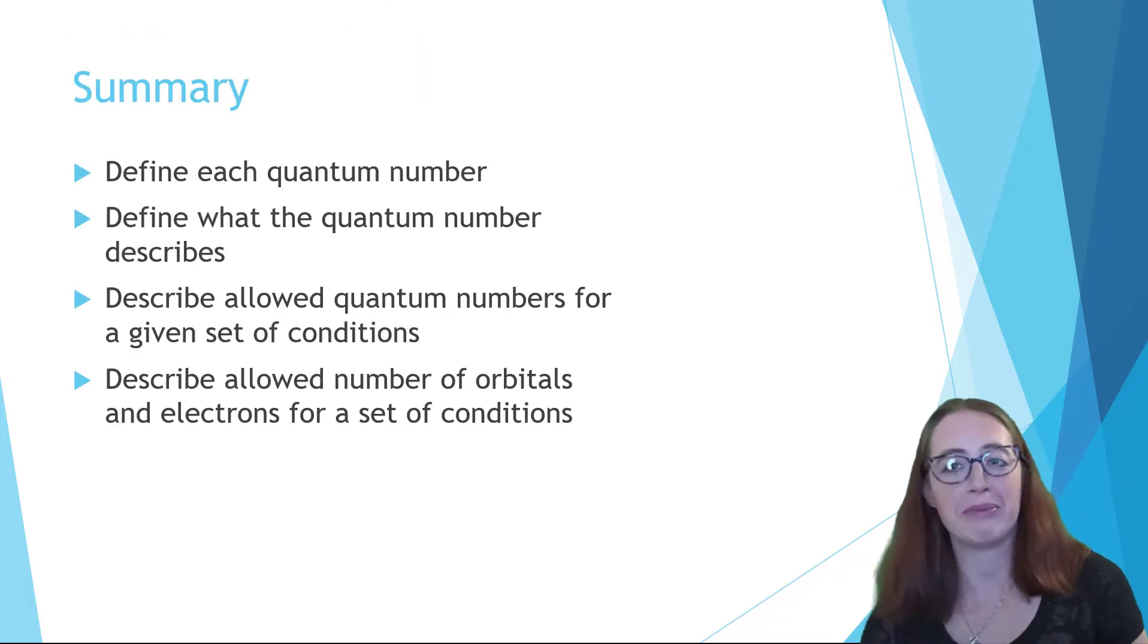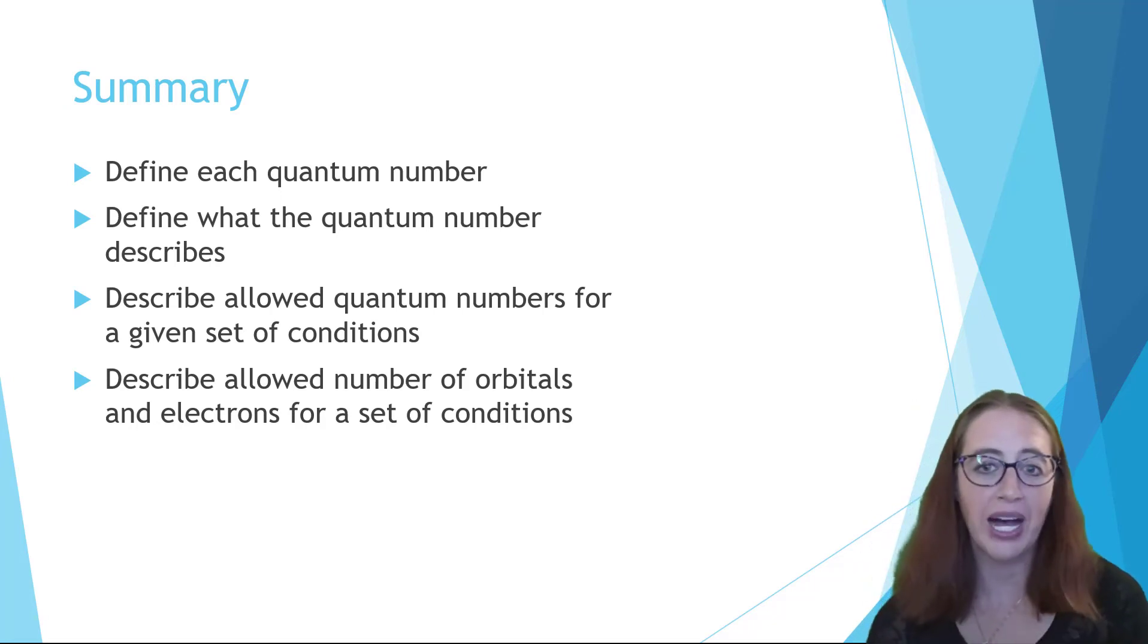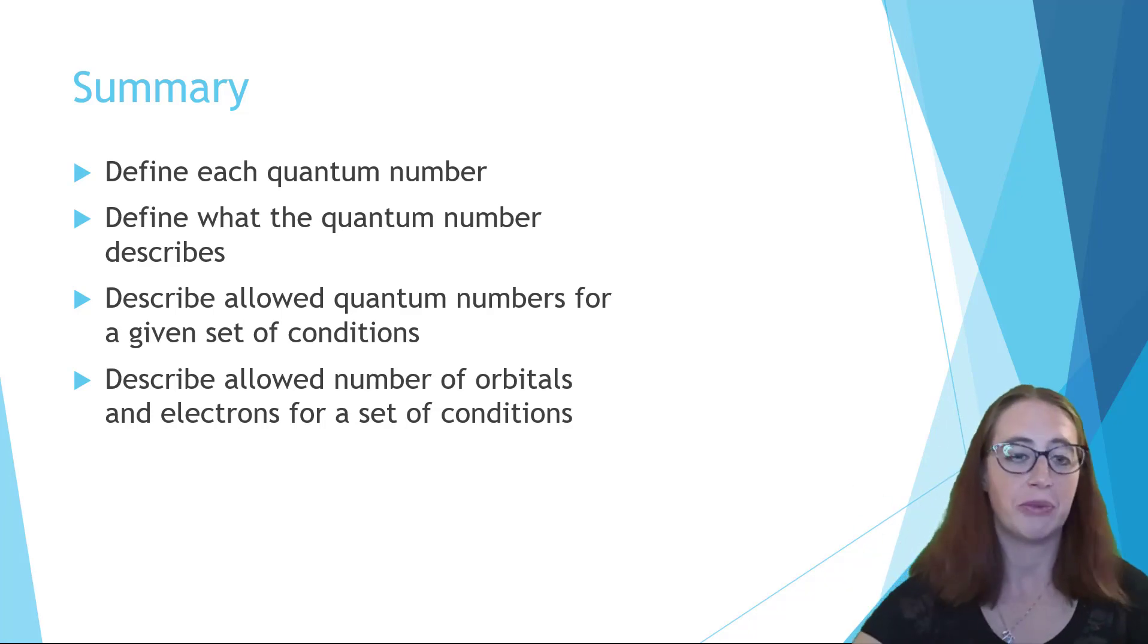We've now defined the four quantum numbers, n, l, m sub l, and m sub s. We've talked about why they are allowed to be the numbers that they are, and how that determines possible orbitals within an energy shell, the number of each orbital, the number of electrons. And so these are all the sorts of problems that you would need to be able to do. And we'll, of course, always do more examples in class.